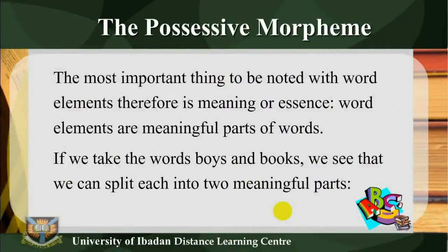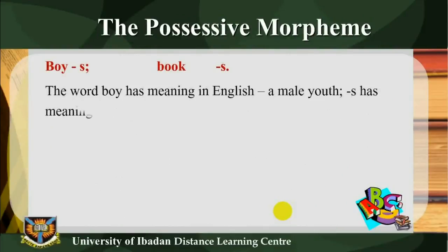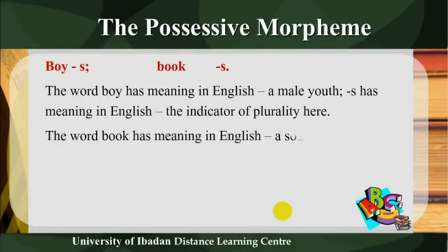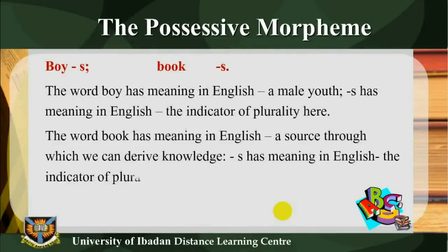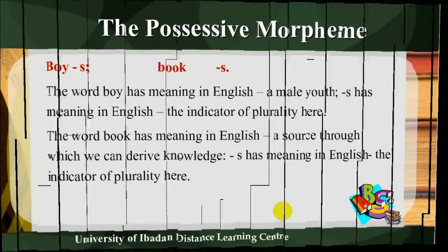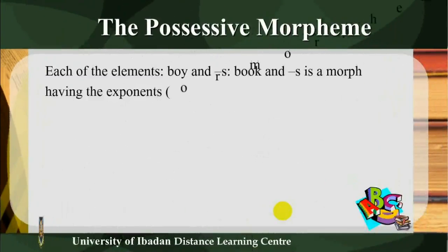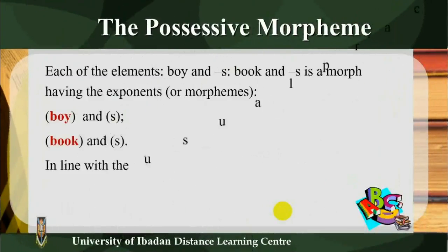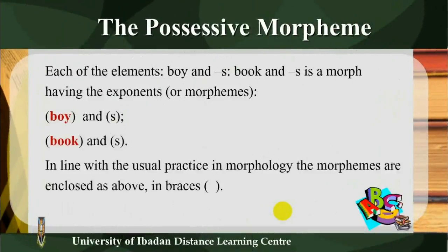The most important thing to note with word elements is meaning or essence. If we take the words 'boys' and 'books,' we can split each into two meaningful parts: boy + S, book + S. The word 'boy' means a male youth; S indicates plurality. The word 'book' means a source through which we can derive knowledge; S indicates plurality. Each of the elements — boy and S, book and S — is a morph having the morphemes boy and S, book and S. In morphology, morphemes are enclosed in braces.